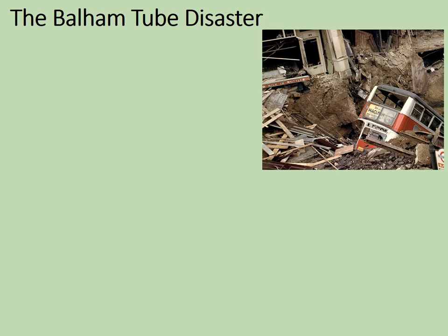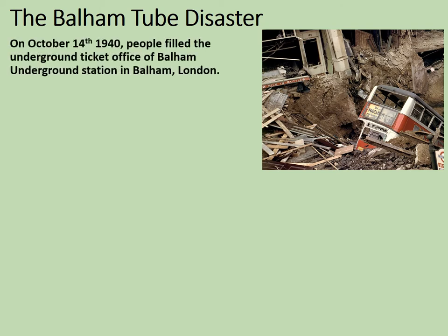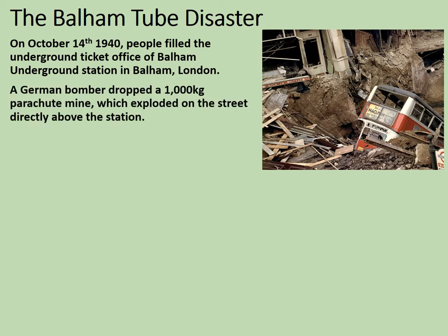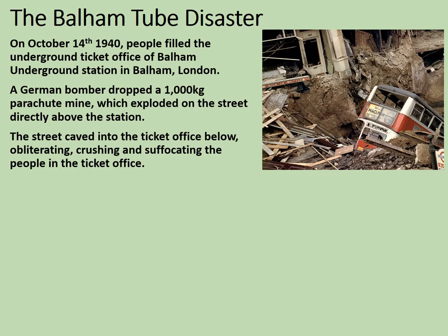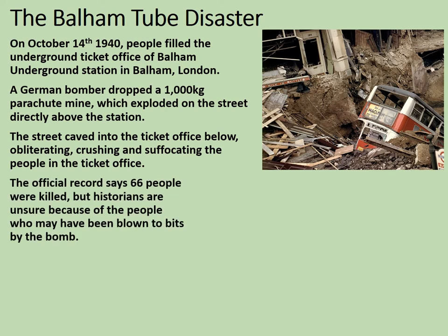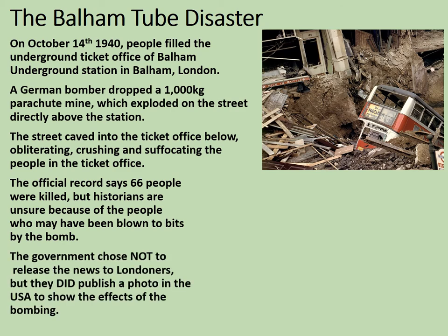Disaster number one: the Balham Tube Disaster. On October 14th, 1940, people filled the Underground ticket office at Balham Underground Station in London. A German bomber dropped a 1,000 kilogram parachute mine, which exploded on the street directly above the station. The street caved into the ticket office below, obliterating, crushing, and suffocating the people inside. The official record says 66 people were killed, but historians are unsure because of the number of people who may have been blown to bits by the bomb. The government chose not to release the news to Londoners, but did publish a photograph in the USA to show the effects of the bombing.